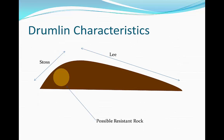Now there's possibly resistant rock in the middle of the drumlin, closer to the stoss end. This is explaining pretty much how the drumlin is going to form, and we're going to look at that now.